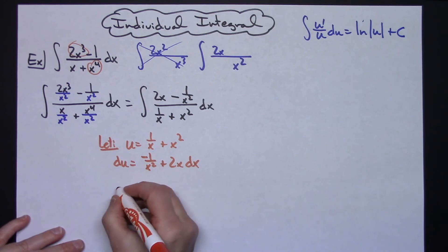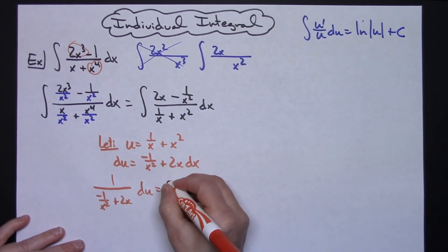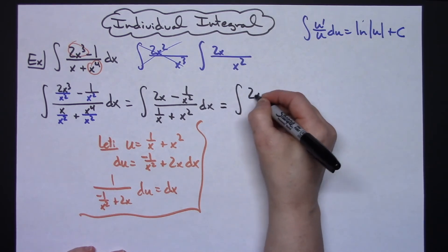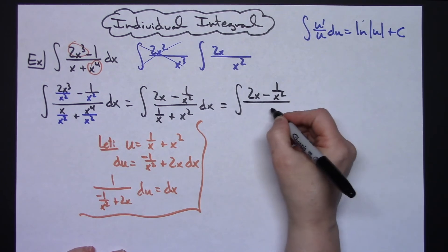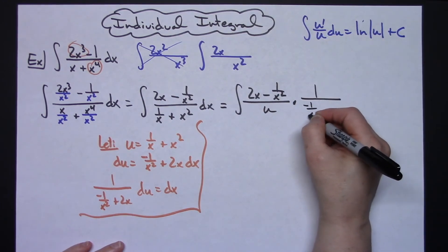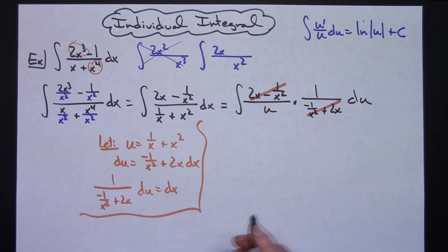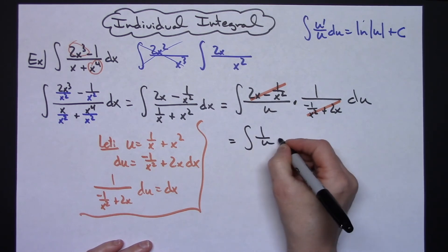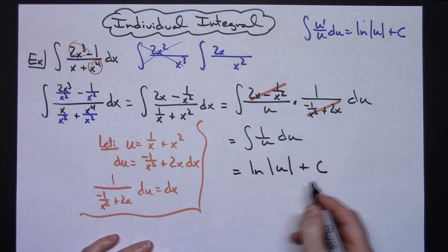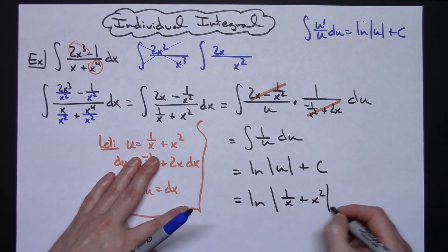Solving for dx: dx equals 1 over negative 1 over x squared plus 2x, times du. Substituting back in, we have 2x minus 1 over x squared on top, u on the bottom, and we replace dx with that expression. That numerator and that denominator factor cancel out nicely, leaving us with 1 over u du — which gives natural log absolute value of u plus c. Replacing u, the final answer is the natural log absolute value of 1 over x plus x squared, plus c.